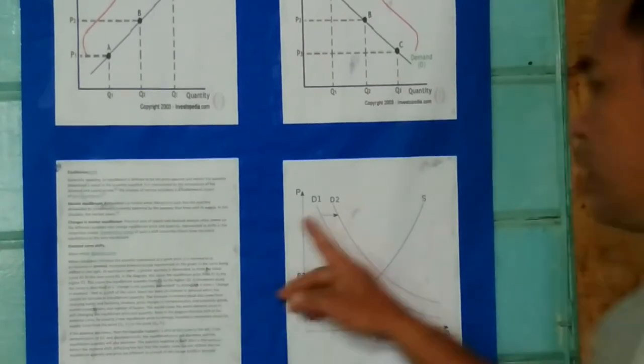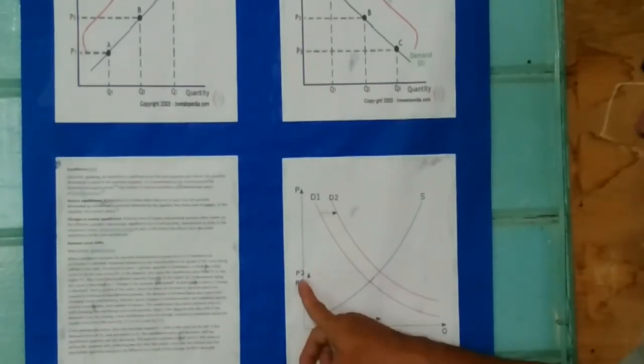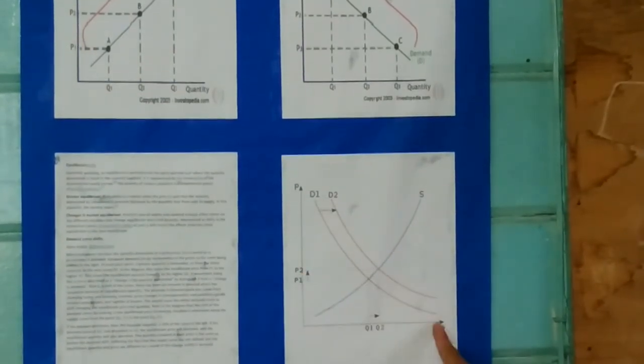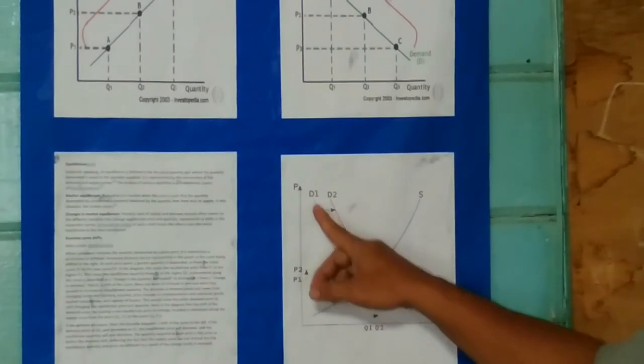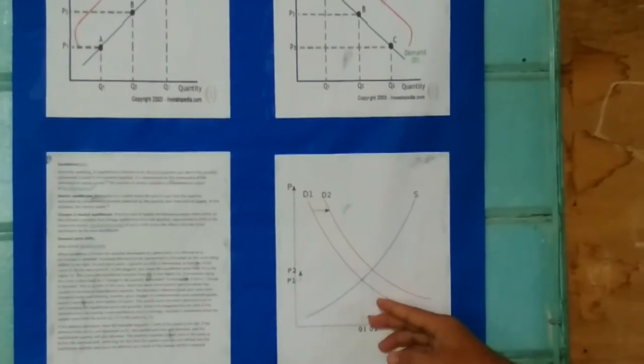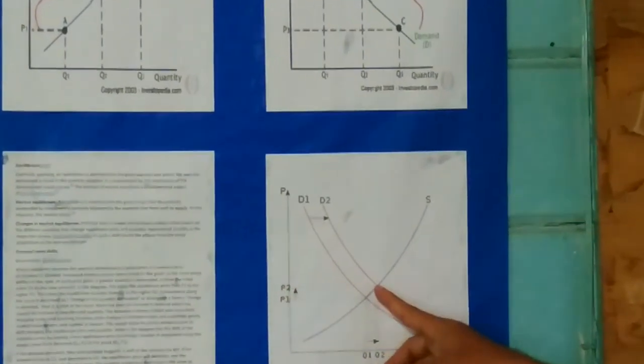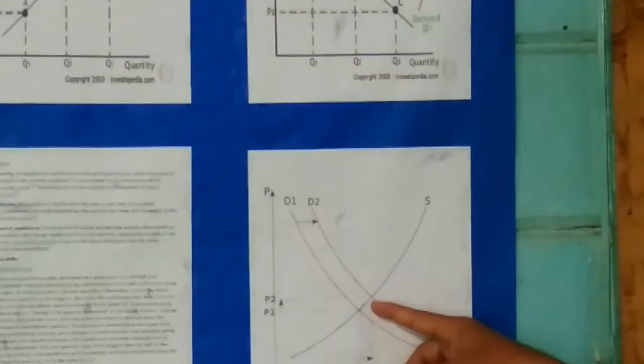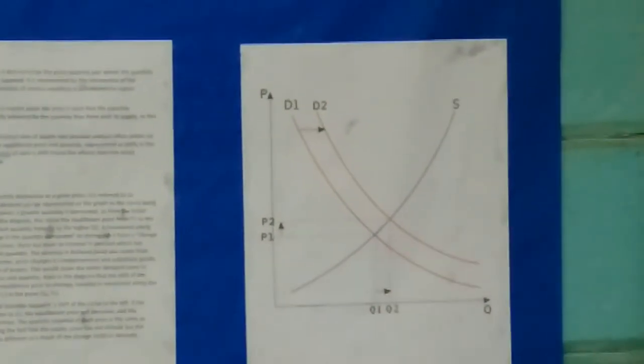So in this situation, let me show here that the graph states that when demand is being demanded and supply becomes higher, the price becomes higher too. So there is a balance. That is the meaning of equilibrium, there is a balance.